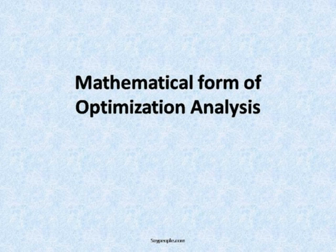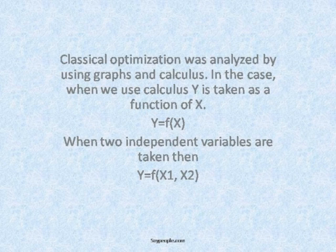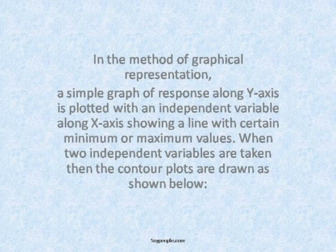The mathematical form of optimization analysis. Classical optimization was analyzed by using graphs and calculus. When calculus is used, y is taken as a function of x: y = f(x). When two independent variables are taken, then y = f(x1, x2). In the method of graphical representation, a simple graph of response along the y-axis is plotted with an independent variable along the x-axis, showing a line with certain minimum or maximum values.